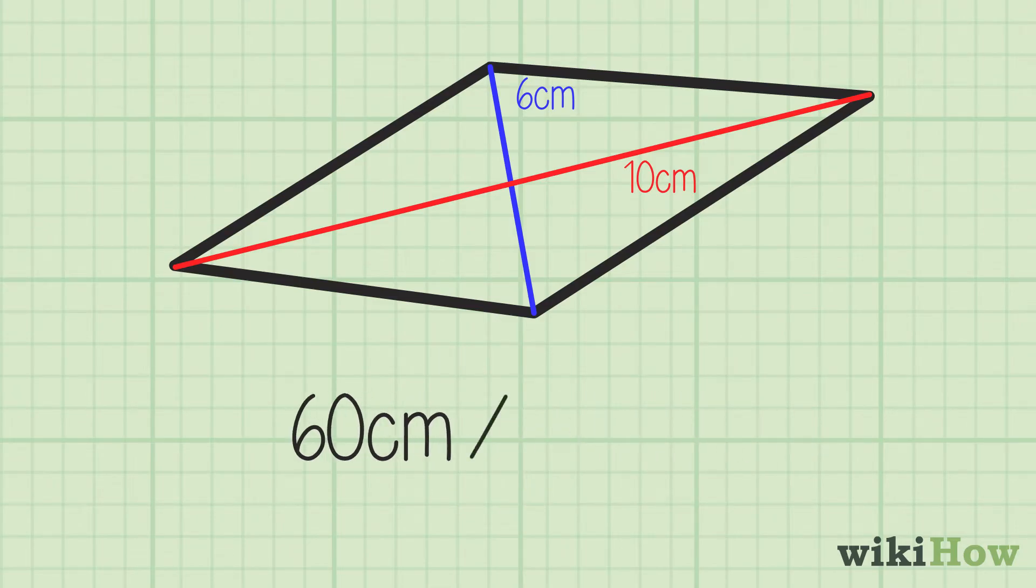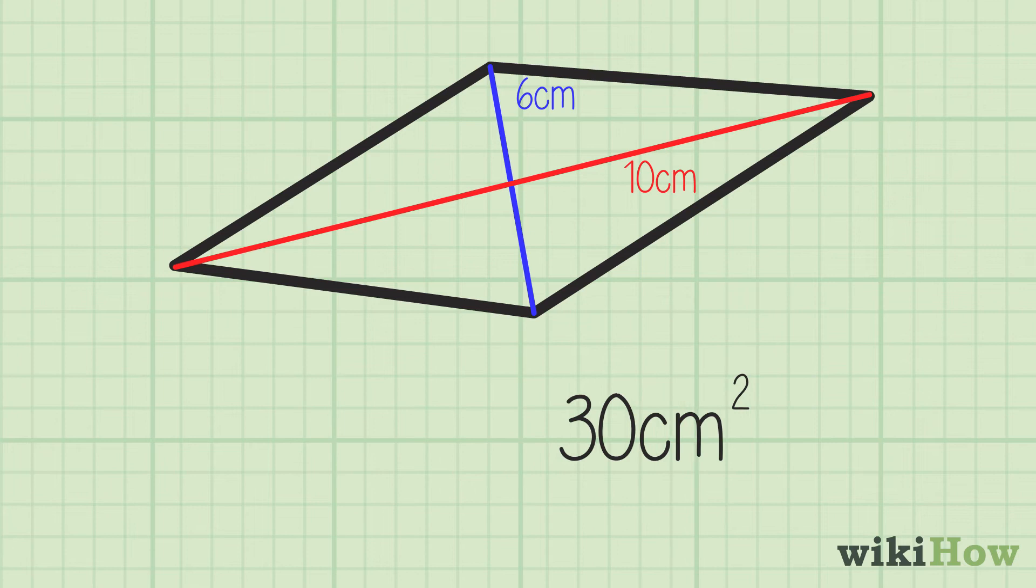Finally, divide the result by 2. Don't forget to square your units when you write the result. Since you're measuring the area, 60 divided by 2 equals 30. So our rhombus has an area of 30 centimeters squared.